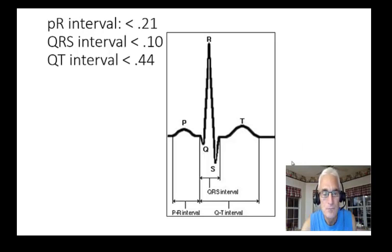Let's look at the PR interval. Look here, see at the bottom, PR. From the beginning of the P to the beginning of the QRS, that's called the PR interval. Look at that QRS. That first little downward deflection is the Q, the upward is the R, and then the downward at the end is the S. The PR interval should be less than 0.21 or less than five of a box. Remember, each box is 0.04.